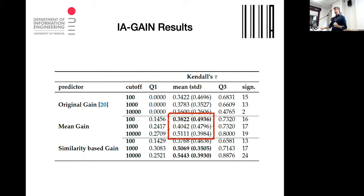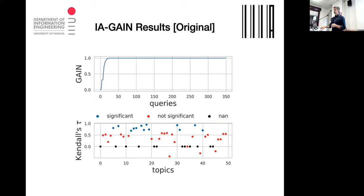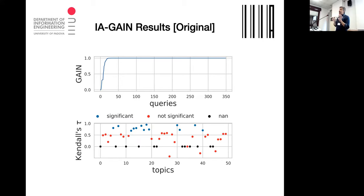If we correct the saturation problem, correlation increases as we add more information — the system becomes better at predicting which variation is most favorable. The similarity-based game works even better. Looking at the graph: the top part shows 350 queries (50 information needs × 7 reformulations). For fewer than 50 queries, there's a reasonable difference in game values; but for the remaining 300, the gain is practically one, making correlation difficult since there's no difference between query variants.